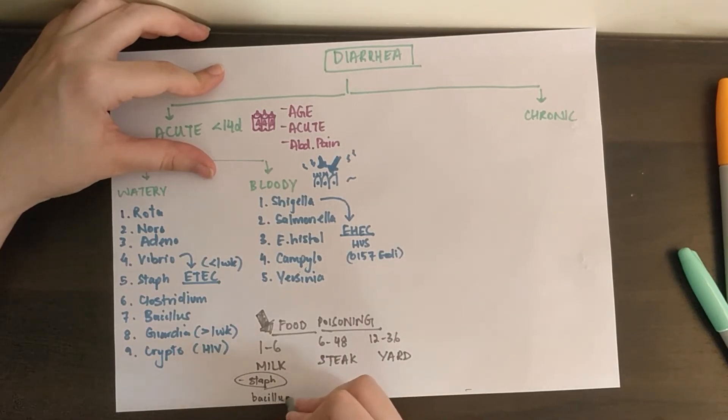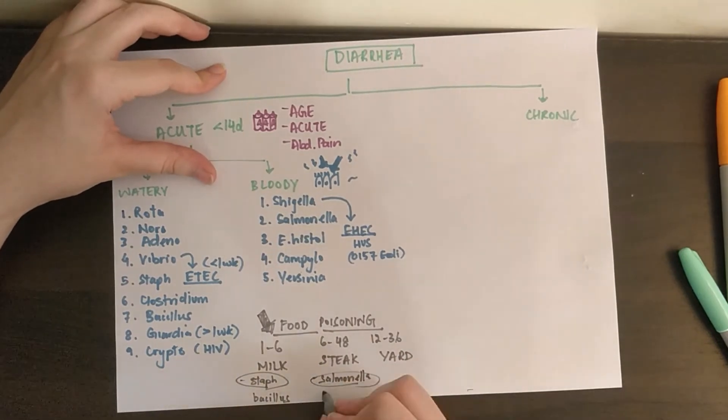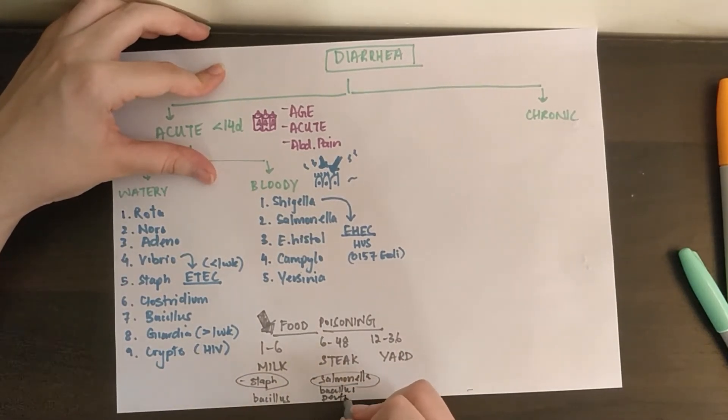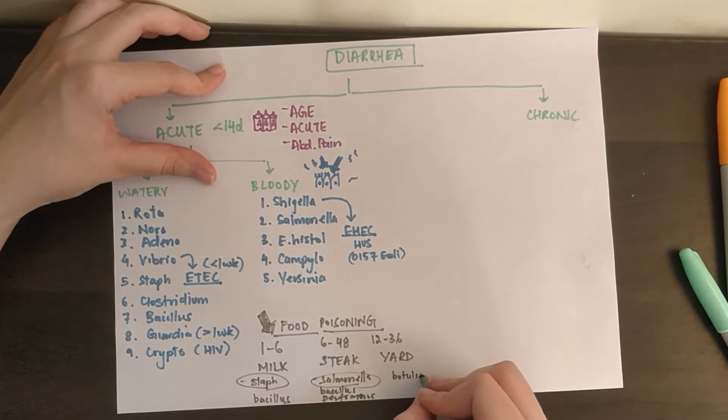Less than 6 hours caused by bad milk and dairy, which is staph. Bacillus can also be present in this category. Steak, which is bad poultry caused by salmonella. And bottles, strewn over the yard, so botulinum causing flaccid paralysis.